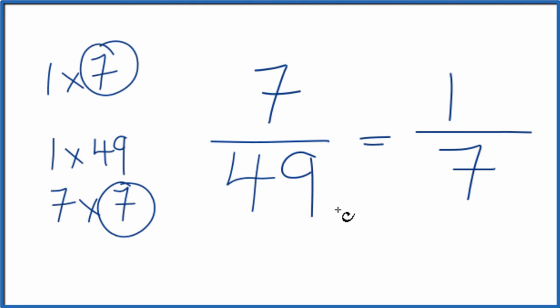We've simplified 7/49 down to 1/7. We can't reduce this any further. These are equivalent fractions. 7 divided by 49 and 1 divided by 7 give you the same value. It's just that we've simplified 7/49 down to 1/7.